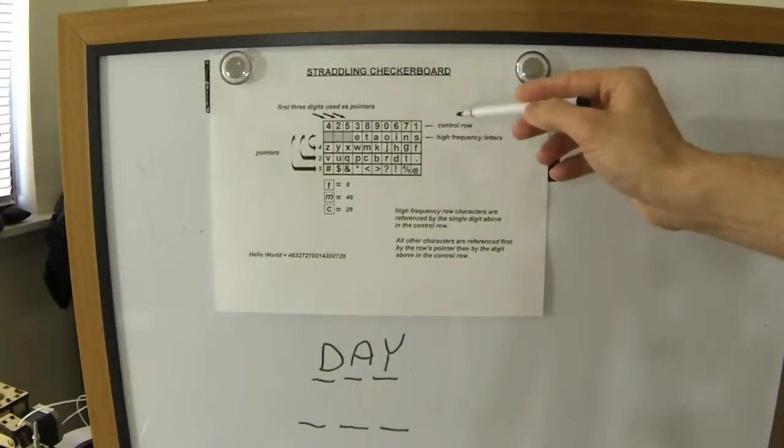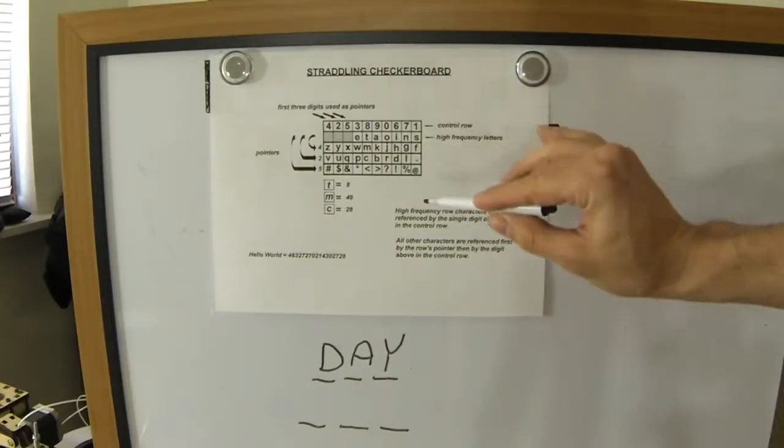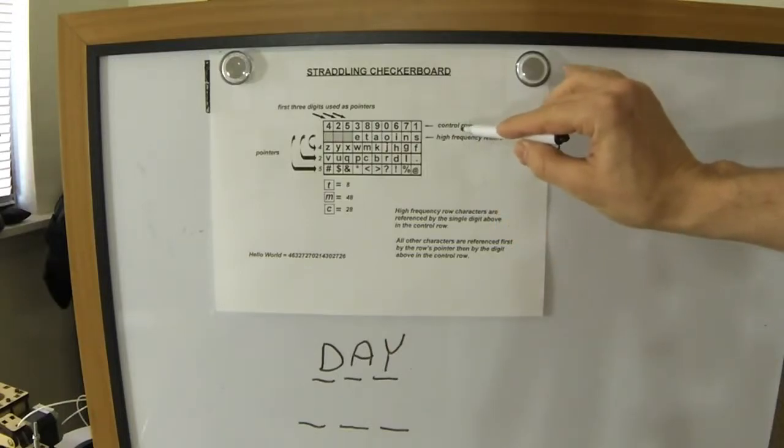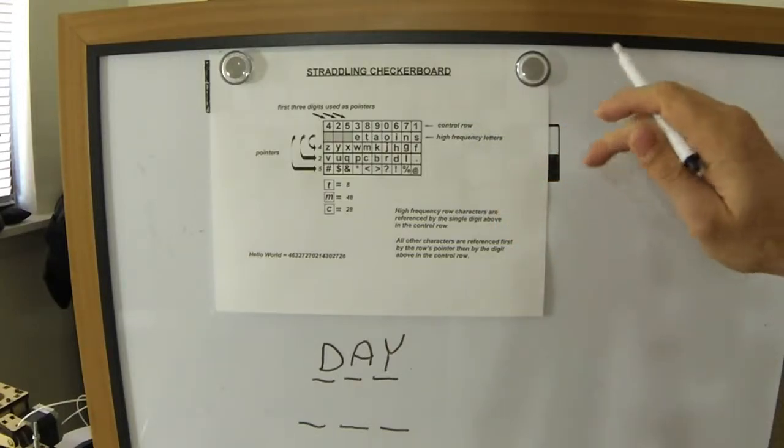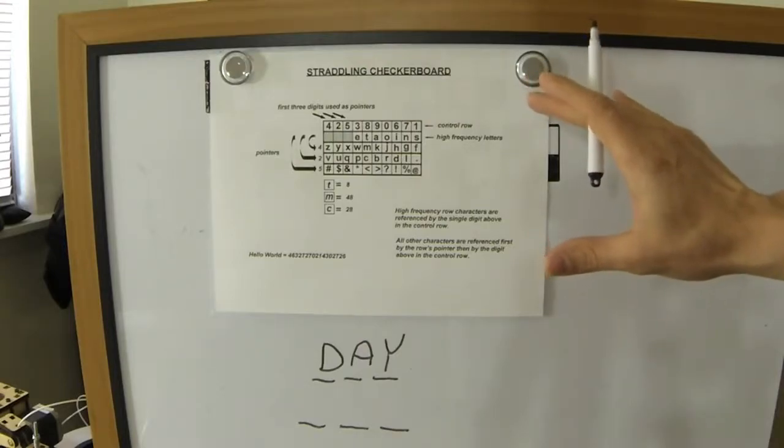The straddling board will convert your plain text letters to numbers, and it will do it in such a way as to help hide a bit the high-frequency letters.